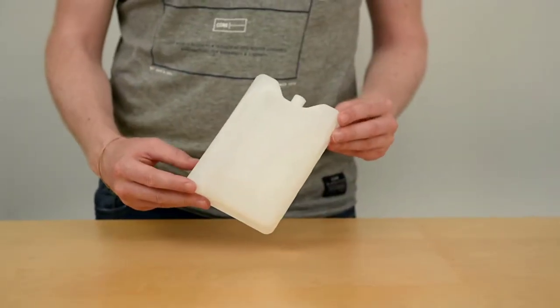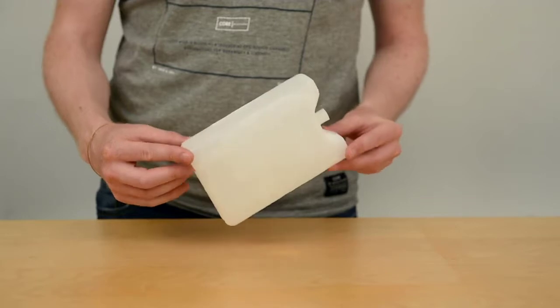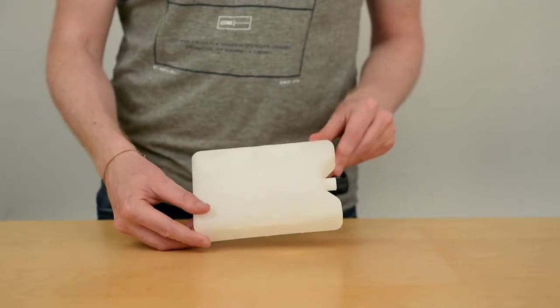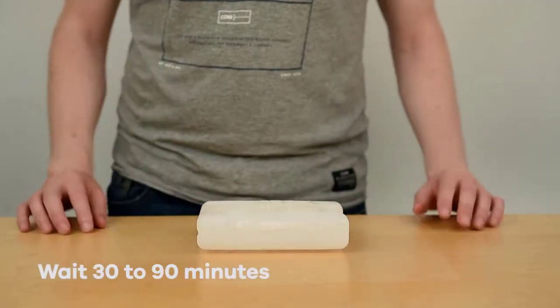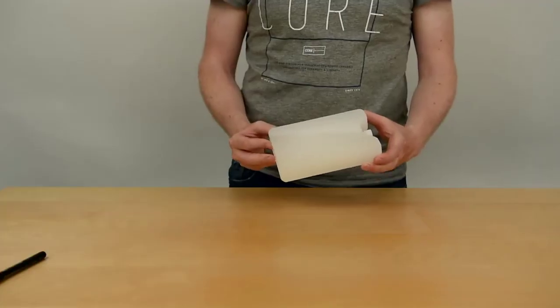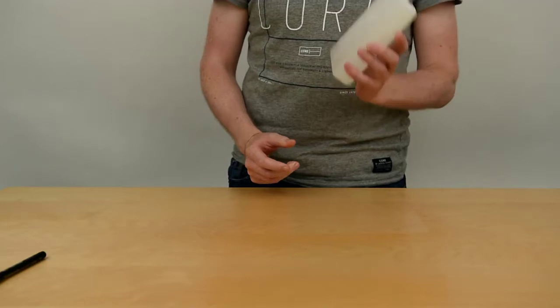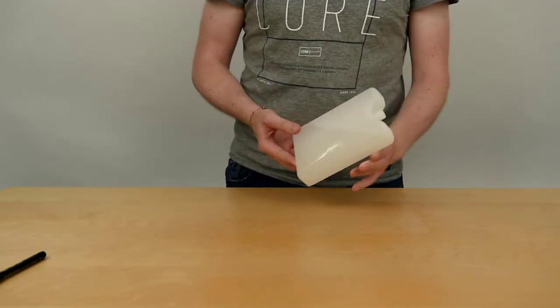When we take ice packs from a freezer, they can be as cold as minus 20 degrees, so need time to condition or reach 0 degrees centigrade. We place the number of ice packs we need for the shipment on a table with some space between each, and wait 30 to 90 minutes for them to condition at 0 degrees centigrade.